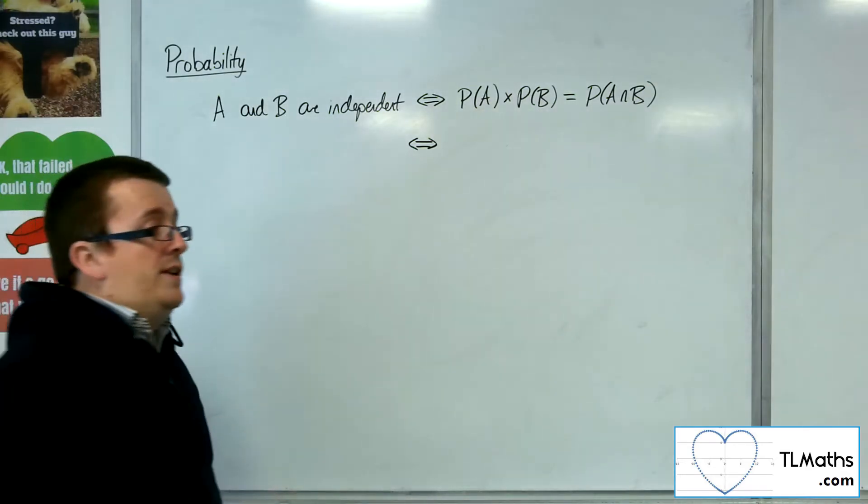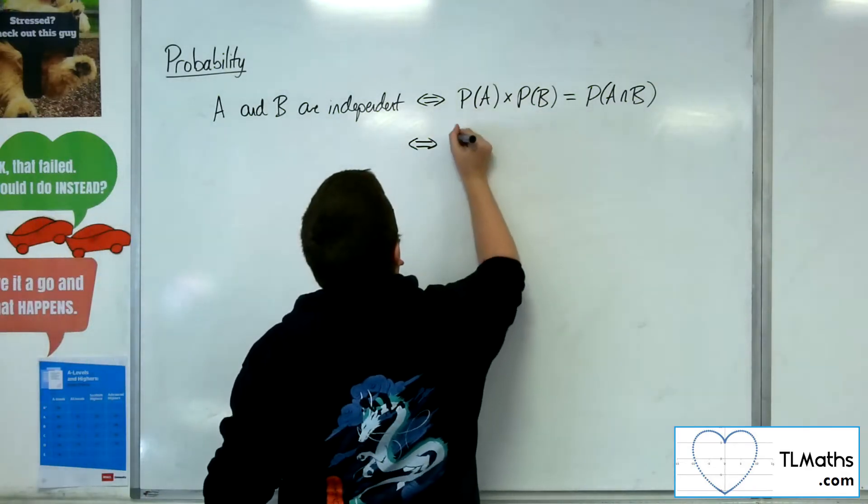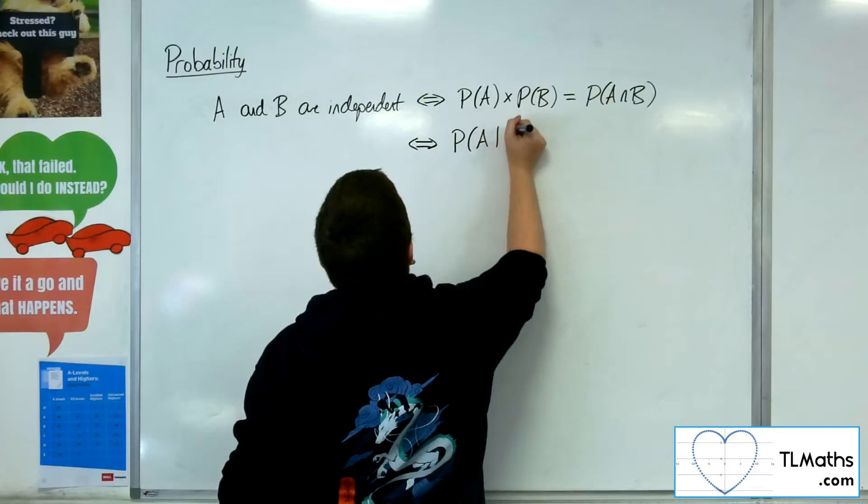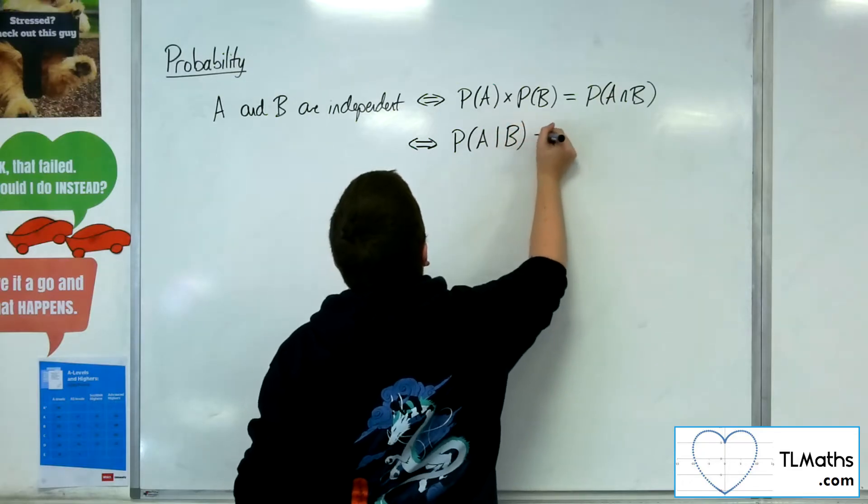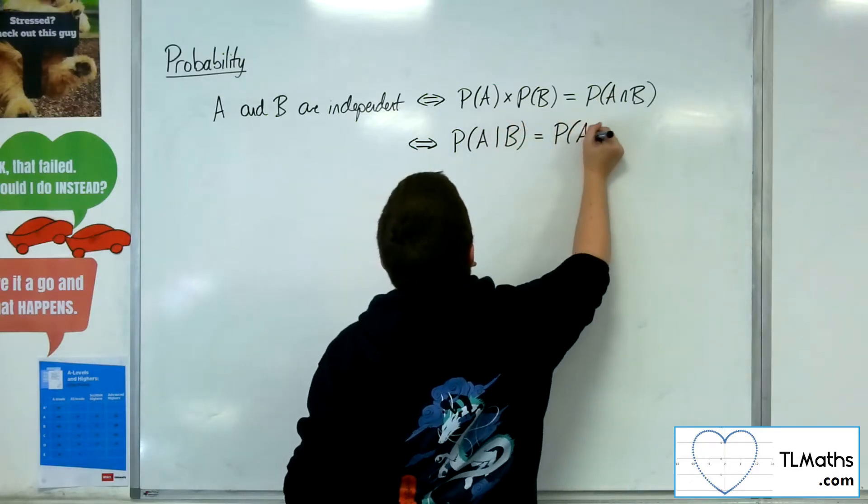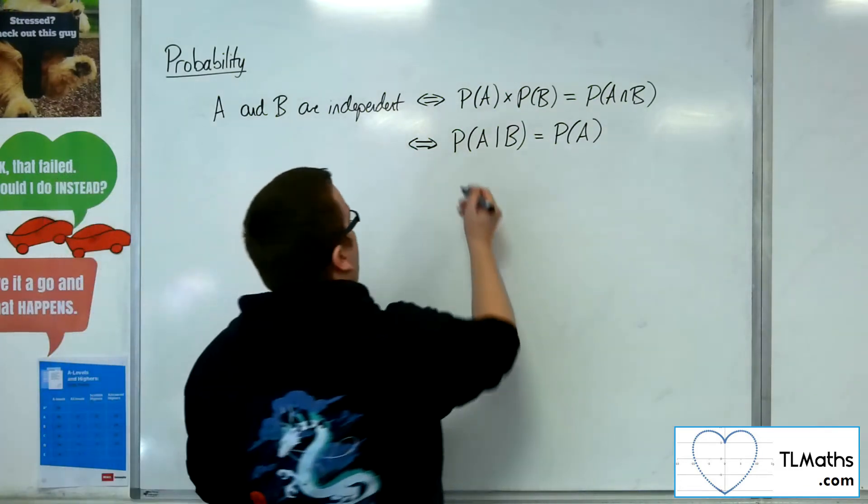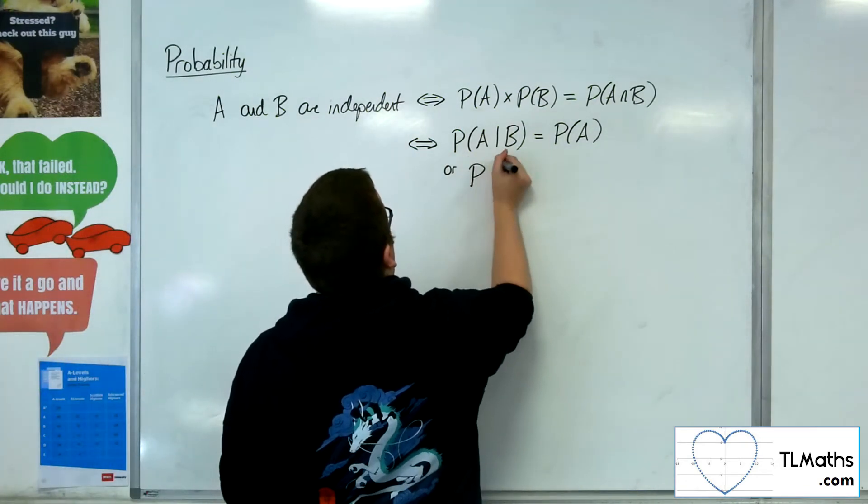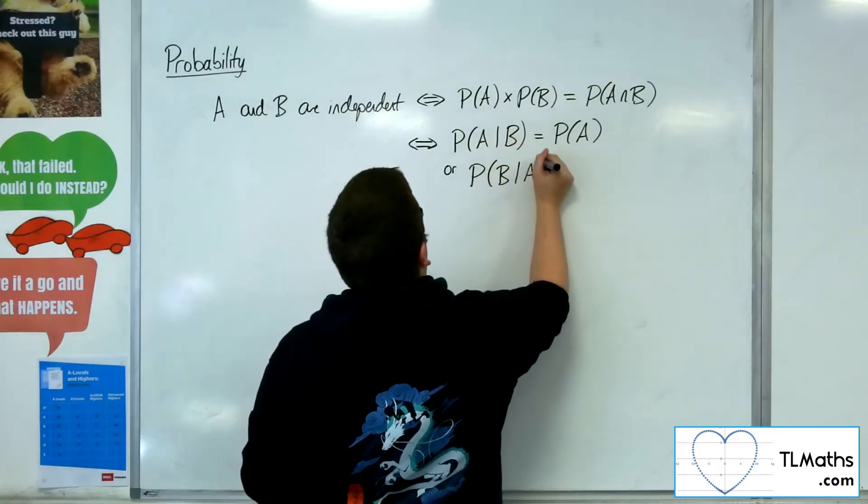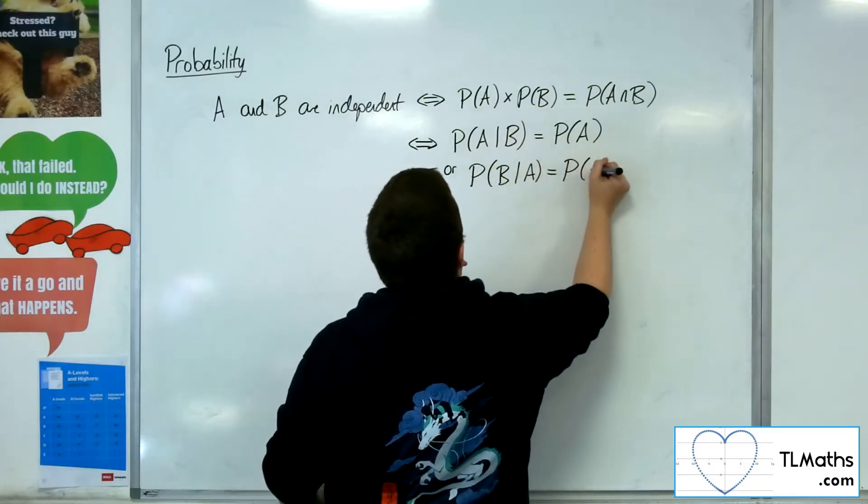are independent if and only if the probability of A given B is the same as the probability of A. Or, vice versa, the probability of B given A is the same as the probability of B.